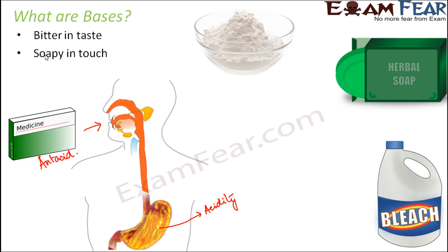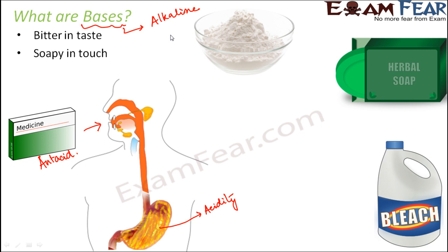In the initial days, bases were also known as 'alkaline.' Acids and alkaline were the terms used in those days. Alkaline is basically an Arabic word which means ashes of the salt wort — salt wort being a plant which mostly grows in salt marshes. The ashes of that plant were referred to as alkaline. That was the earlier name of bases, but later it became more commonly called a base.